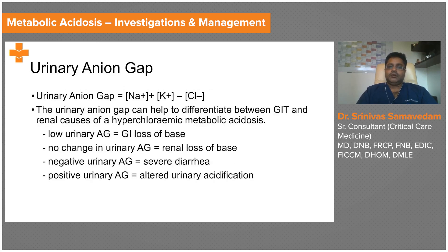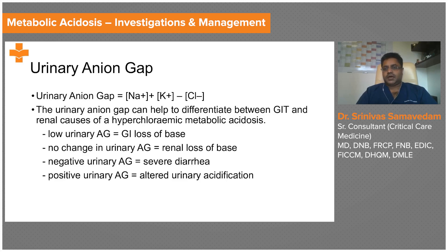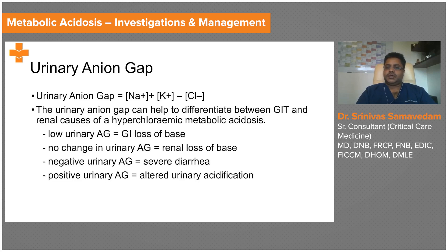In patients who have a normal anion gap metabolic acidosis, you also need to identify whether this normal anion gap is coming from a GI loss or a renal tubular loss. The urinary anion gap is represented by urinary sodium plus urinary potassium minus urinary chloride. This helps you differentiate between GI and renal causes of a hyperchloremic normal anion gap metabolic acidosis.